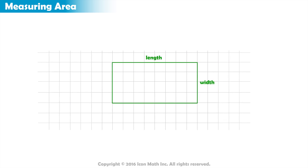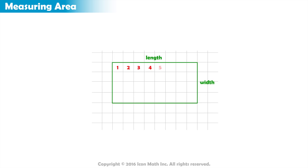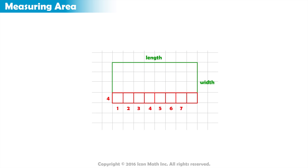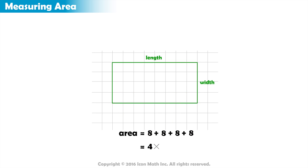Suppose we have a rectangle completely covered by 4 rows of 8 unit squares without overlaps. We don't have to count the unit squares one by one. We have 4 equal rows, each containing 8 unit squares. So the total is 8 added to itself 4 times, or 4 times 8.